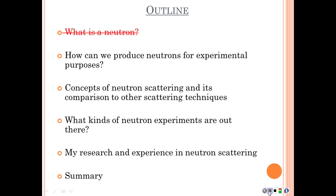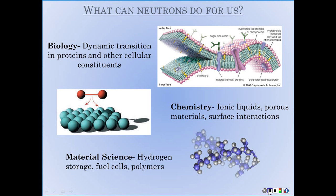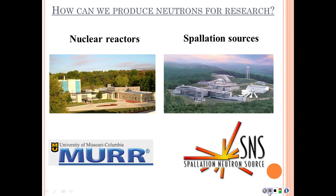So how can we produce neutrons for experimental purposes? Before I talk about neutron production, I want to give a little motivation — hopefully by the end of this talk you'll be convinced that neutrons can help you understand many different types of materials. It touches every area of science and engineering, from biology to chemistry to physics to material science. There are two main ways to produce neutrons for research: you can produce them in the cores of nuclear reactors, or through something called spallation.